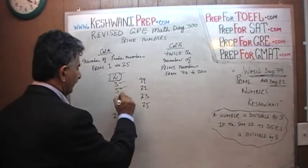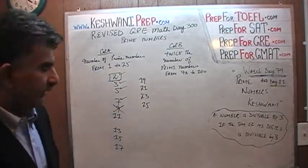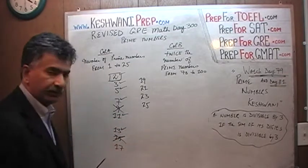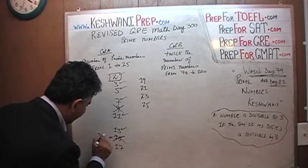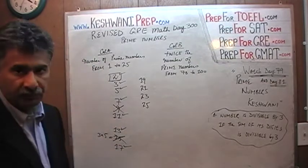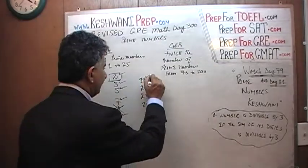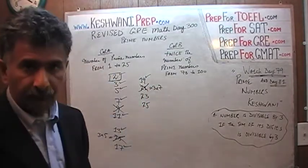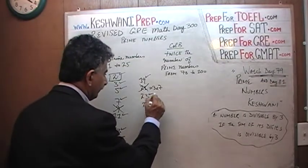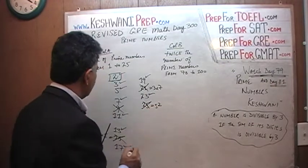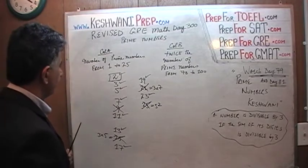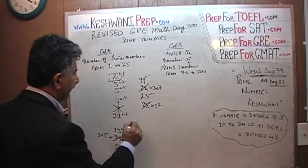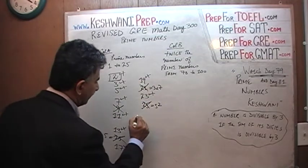3 is a prime number, as are 5 and 7. 9 is not a prime number because you can divide 9 by 3. 11 is a prime number, as is 13. 15 is not a prime number because 15 equals 3 times 5. 17 is a prime number, as is 19. 21 is not because that is 3 times 7. 23 is a prime number, and 25 is not because 25 is 5 squared. So how many do we have? We count 9 prime numbers from 1 to 25.